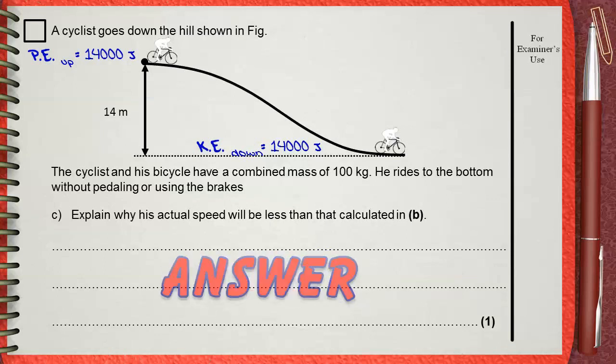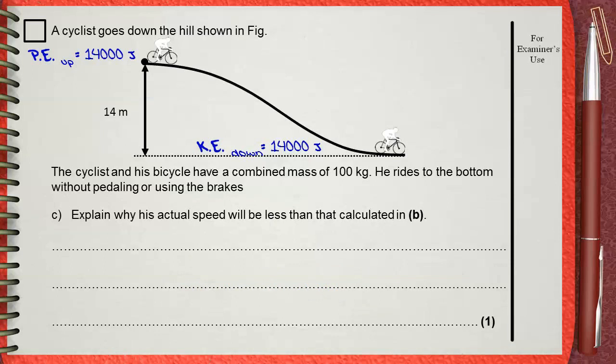In part B, we assumed a free fall case — no air resistance, no pedaling, and no force resisting or aiding the motion. This led us to say that potential energy at the top of the hill is completely converted to kinetic energy at the bottom, so they are numerically equal: 14,000 joules. But actually, this is not the truth.